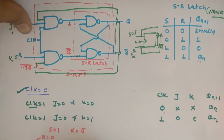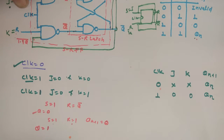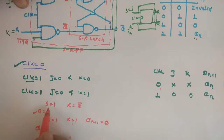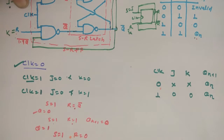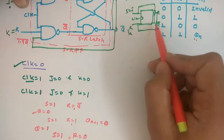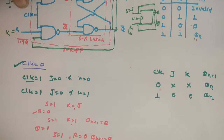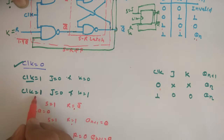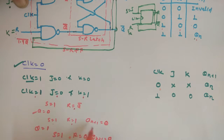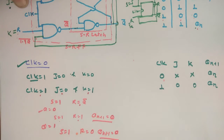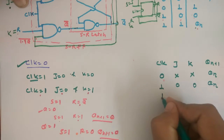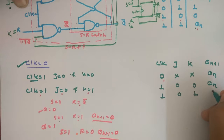If Q is equal to 1, then S will be equal to 1 and R will be equal to 0. Here S=1, R=0 gives output 0, so Q(n+1) will be 0 only. So in both conditions, when clock is 1 and J is equal to 0 and K is equal to 1, the output will be 0 always.